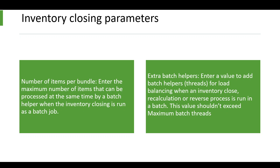Consider a bundle of 50 items where one specific item is taking hours to complete — until that item finishes, the remaining 49 items are waiting. When you decrease the number of items per bundle, this eliminates the waiting time, which increases performance and increases the opportunity for parallelization.